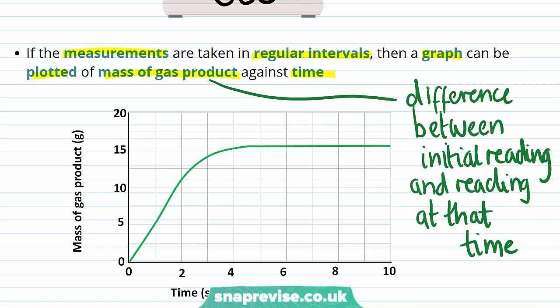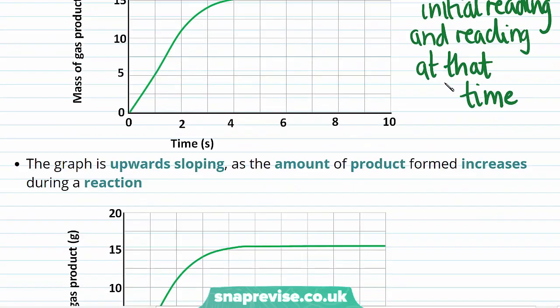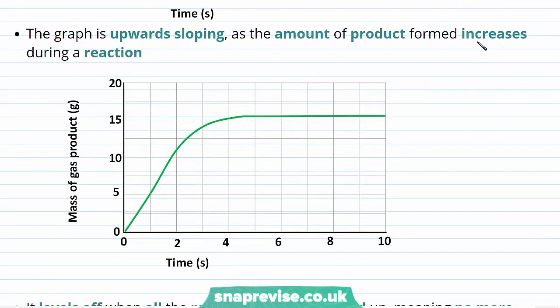An example of the sort of graph that you can plot is shown here, with time along the x-axis in seconds, indicating the time since the start of the reaction, and the mass of gas product produced on the y-axis. At the beginning of this graph, the graph is upward sloping as the amount of product formed increases during the reaction.